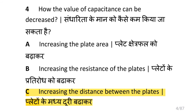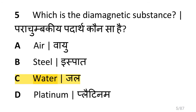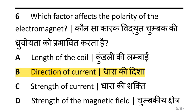The answer is: increasing the distance between the plates decreases capacitance. Which is the diamagnetic substance? That is water. Which factor affects the polarity of the electromagnet? That is the direction of current.